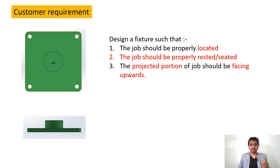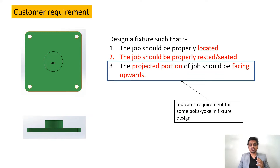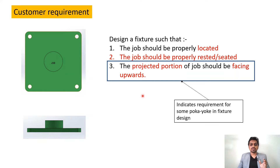The third requirement is that the projected portion of the job should be facing upward. Now, how does the data indicate the requirement of Poka-yoke? The third point — the projected portion should always face upwards — indicates the need for Poka-yoke in the fixture, because the part can be placed normally or flipped so the projected portion faces downward. The customer wants it always facing upwards, so we must ensure Poka-yoke in the fixture.